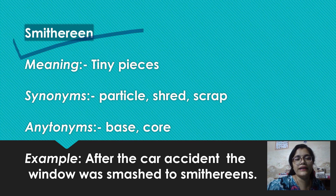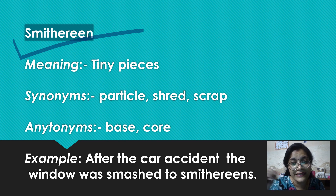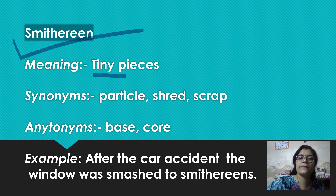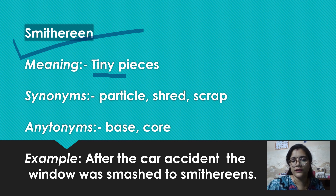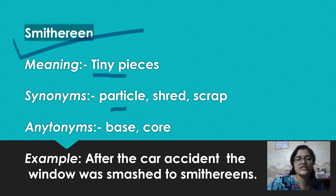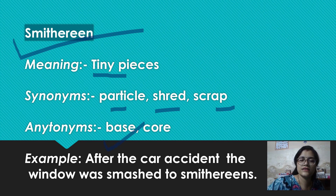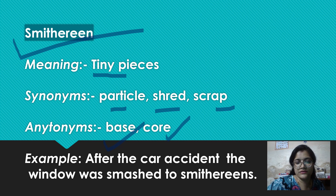Okay, next word hai smithereens — break it into two parts: smithereens. Iska matlab hota hai: to break something into tiny pieces. Synonyms: particles — jab koi cheez break hoti hai toh it becomes divided into smaller parts — particles, shred, ya phir scrap. Antonyms: base, core. Example: After the car accident, the windshield was smashed to smithereens. So yaha par smithereens is the word.